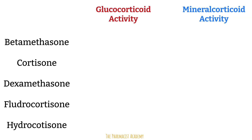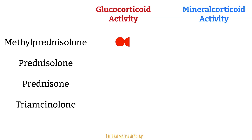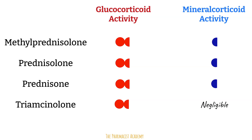Betamethasone has excellent glucocorticoid activity with practically no mineralocorticoid activity — the same applies to dexamethasone. Cortisone and hydrocortisone have balanced glucocorticoid and mineralocorticoid activity. Fludrocortisone has excellent mineralocorticoid activity and is used clinically for that purpose. Methylprednisolone has good glucocorticoid activity with little mineralocorticoid activity. Prednisolone is the active form of prednisone and has balanced glucocorticoid and mineralocorticoid activity. Triamcinolone is used for its glucocorticoid activity due to negligible mineralocorticoid activity.